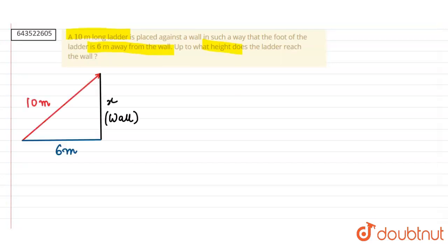This is the diagram in which x is the wall. Let's name this triangle as A, B, and C.